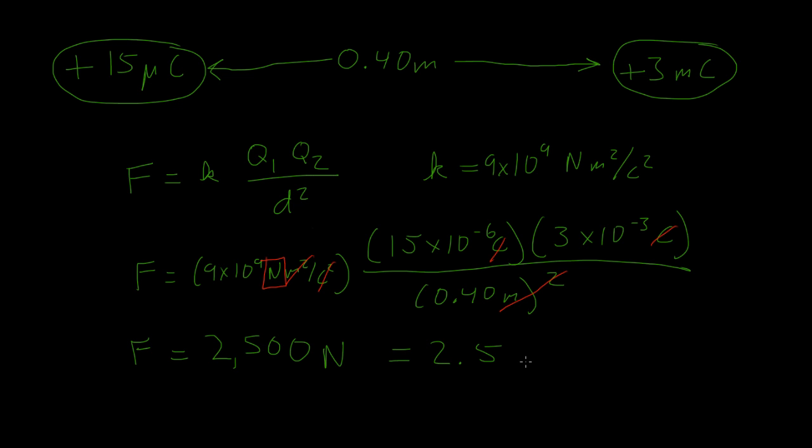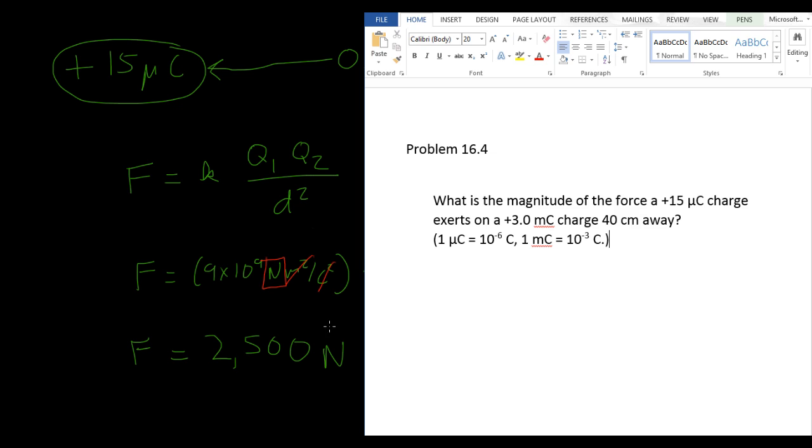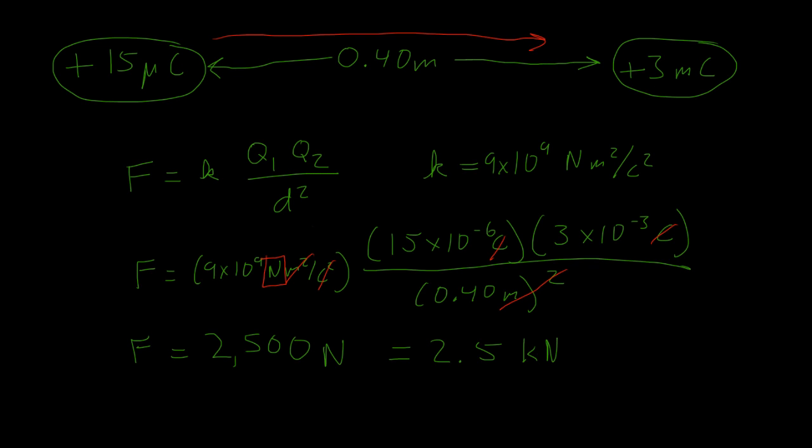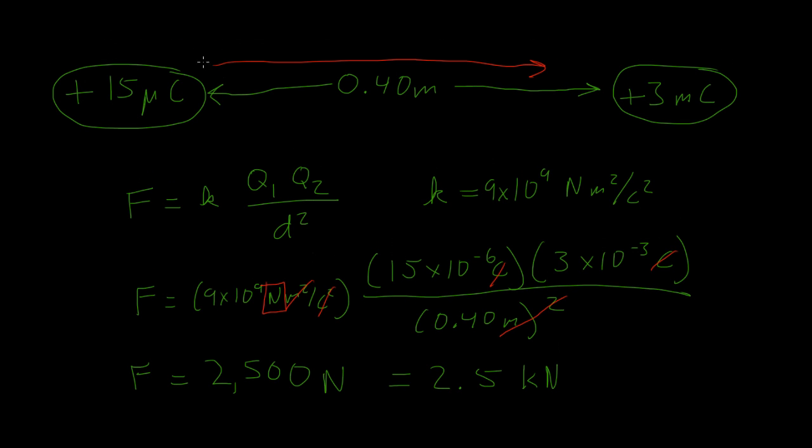And this is the same thing as 2.5 kilonewtons. And so the question asked, what was the magnitude of force that the 15 microcoulomb charge exerts on the 3 millicoulomb? So the 15 microcoulomb charge is repelling the 3 microcoulomb charge with a force of 2.5 kilonewtons. And we know that this is repulsion because this force is positive.